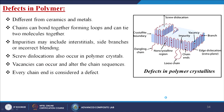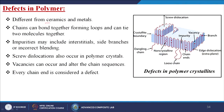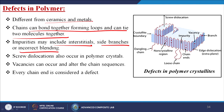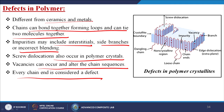Defects in polymers are different from ceramics and metals — chains can bond together forming loops and can tie two molecules together. Impurities may include interstitials, side branches, or incorrect blending. Screw dislocations also occur in polymer crystals; vacancies can occur and alter chain sequences. Every chain end is considered a defect. Types of polymer defects include screw dislocations, impurities, chain ends, vacancies, branching, non-crystalline regions, dangling chains, and loose chains. These defects are very difficult to measure.